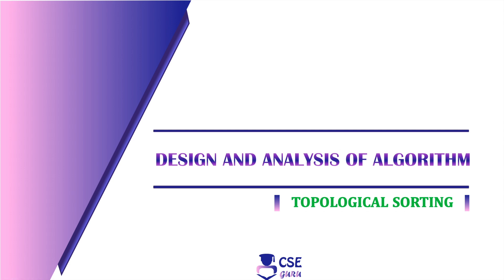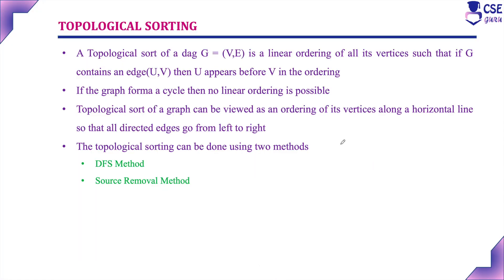Welcome to CSE Guru. In this session we will discuss topological sorting. Already we have discussed topological sorting with one example, both for the DFS method as well as the source removal method. This is the second example. Topological sorting is nothing but linear ordering of vertices. This topological sorting can be implemented with the help of two methods: one is DFS method and another one is source removal method.